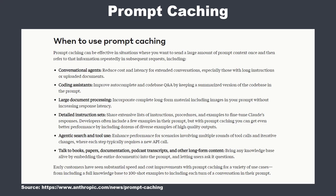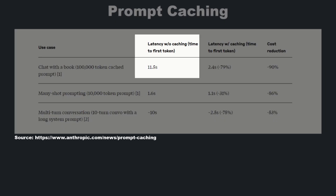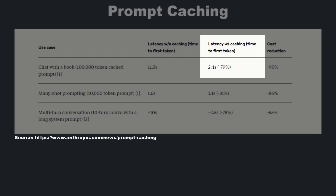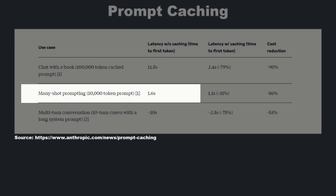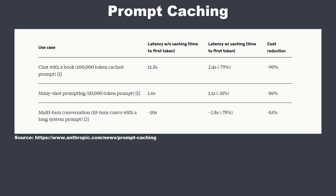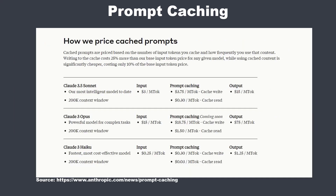Here is a use case example. If you want to chat with a book that has a prompt with 100k tokens, the first time you send it there's nothing in the cache yet — it takes 11.5 seconds. The second time, with 100k tokens cached, latency drops from 11.5 to only 2.4 seconds. For shorter prompts of 10k tokens it goes from 1.6 to 1.1 seconds, a 31% decrease. Cost reduction is also significant at 90% and 86%.